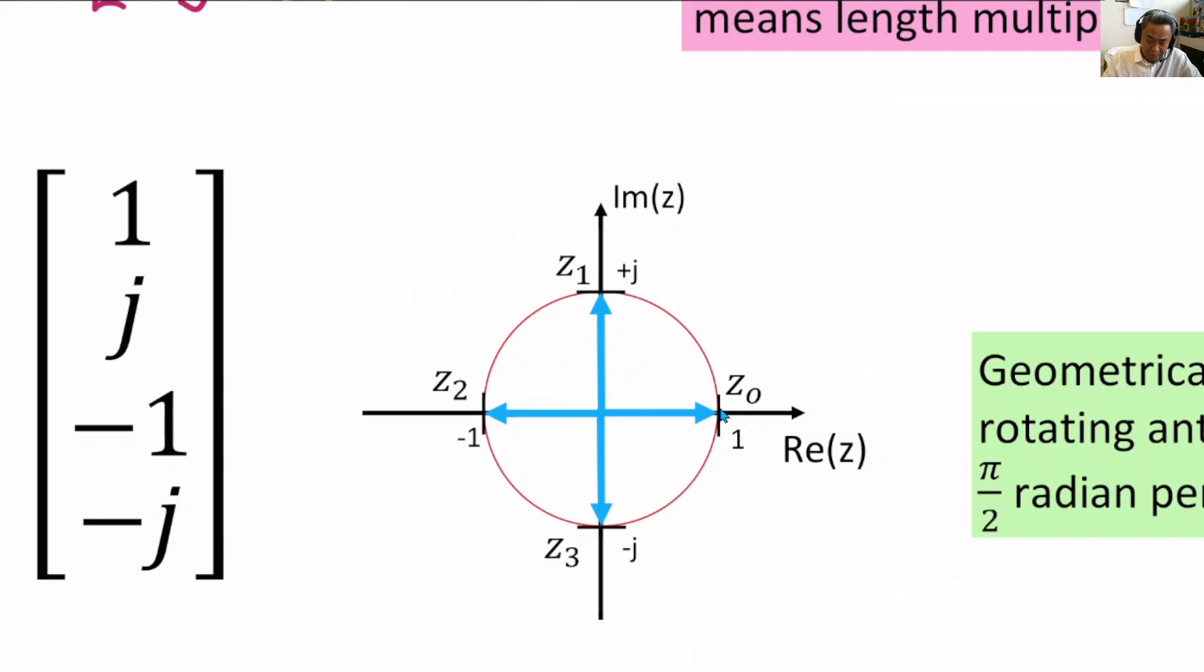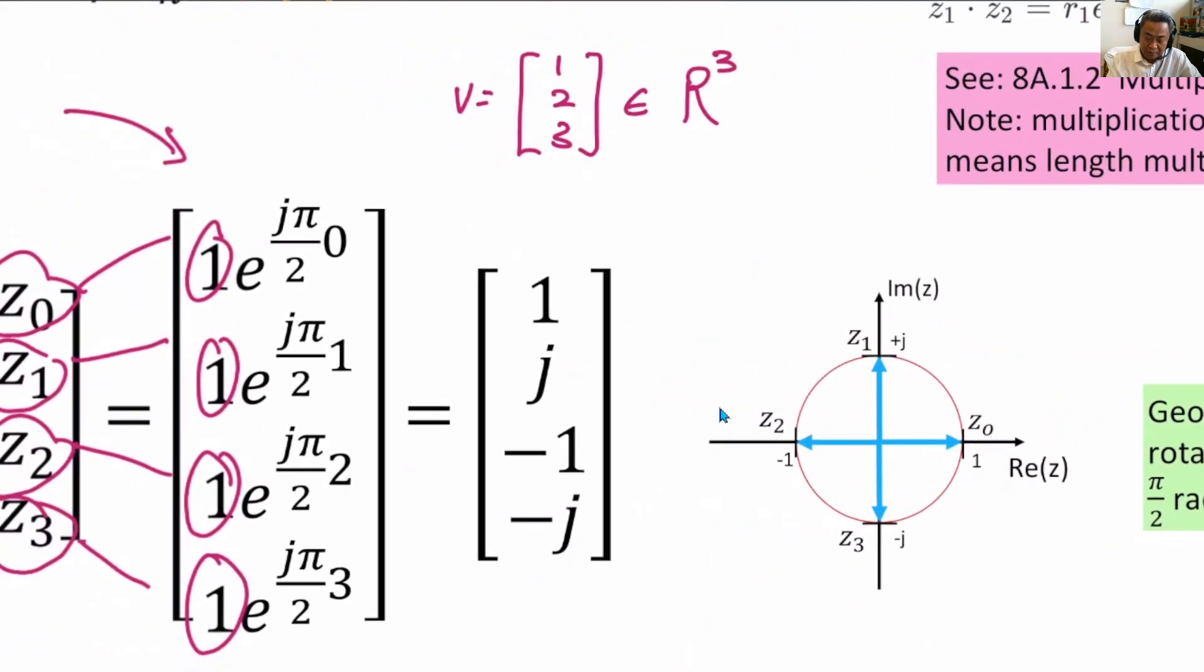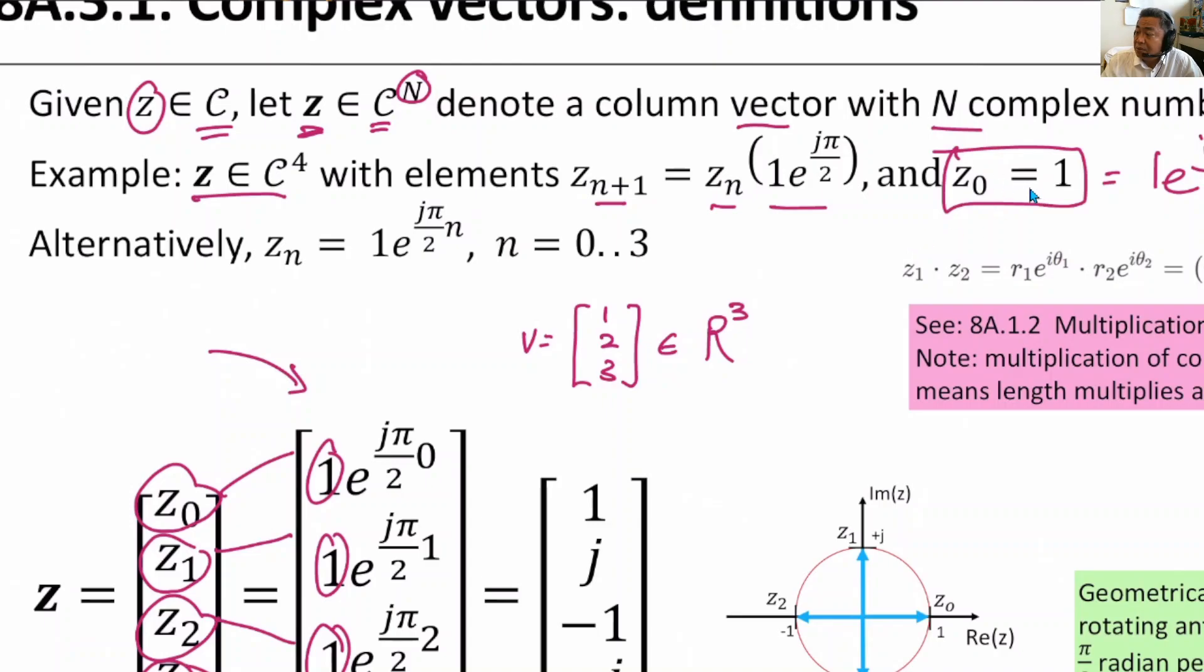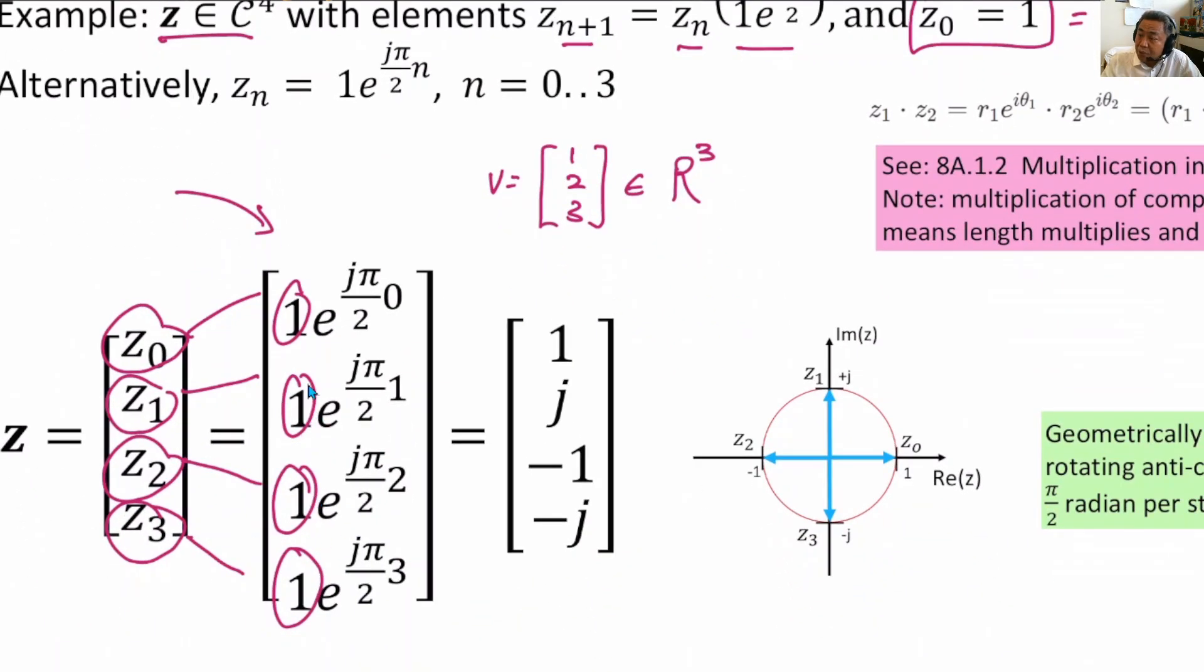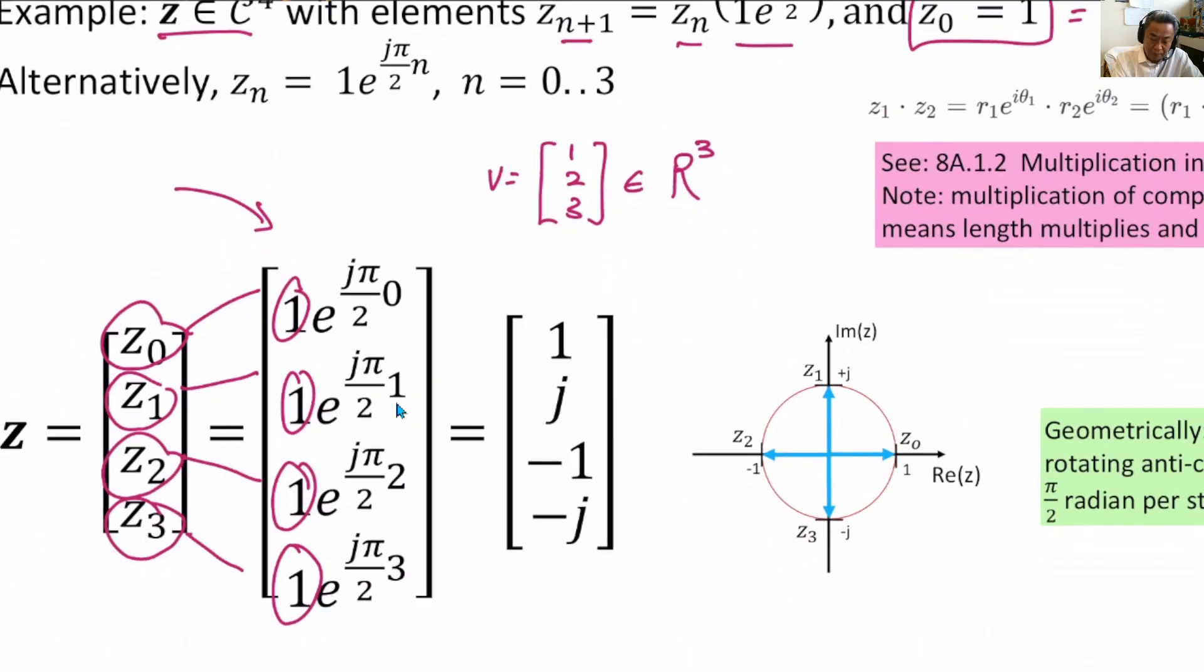What about z1? When we have z1, z1 is simply z0 times 1 e^{j π/2}. So 1 times 1 e^{j π/2} is 1 e^{j π/2}. This is nothing but a radius 1 with angle π/2. So this is the point. From z0, it moves here. You realize that the second number is a rotation along the same unit circle, rotating anticlockwise by 90 degrees.